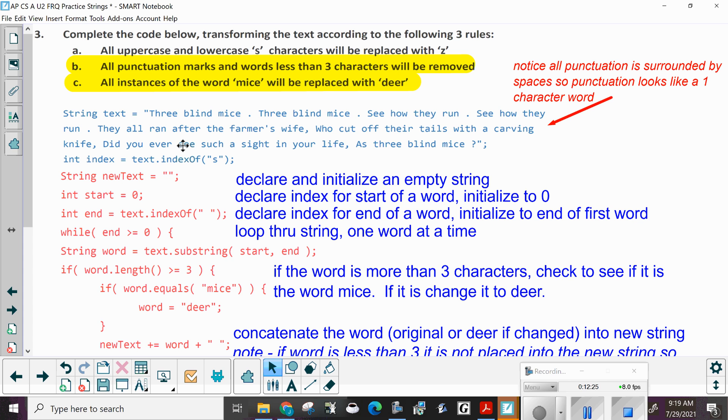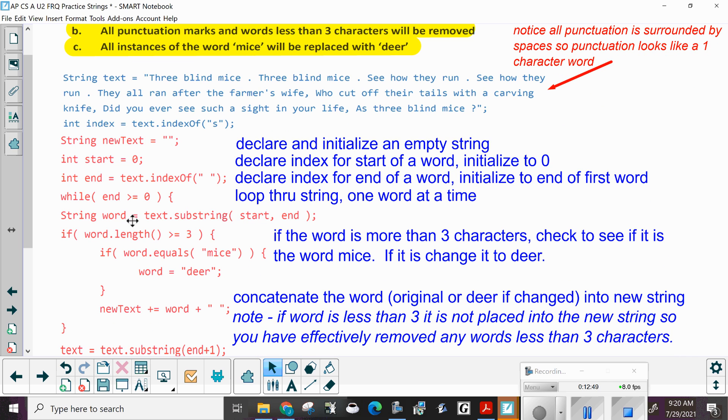So after the other code, you would do string new text. You want to declare and initialize an empty string. Then you want to declare an index for start of a word, initializing it to zero. And then the end is at the space. So three, when you hit the space, three is a word. Now what are you going to do? You're going to loop through the string one word at a time. So you're going to pull off the string. It starts, and it goes to the end. Remember, the end is a space.